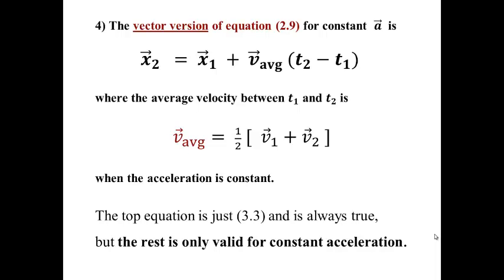The fourth one is just the definition written as vectors. Delta x equals v average delta t. And for constant acceleration, v average is the arithmetic average of v1 and v2. Same thing as we've seen before.